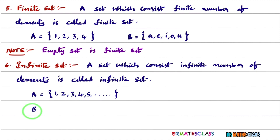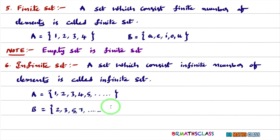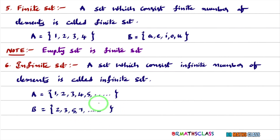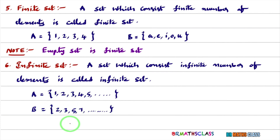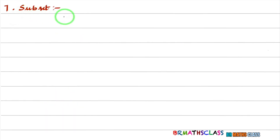Similarly, consider the collection of all prime numbers: 2, 3, 5, 7 and so on. Is the collection of all prime numbers a finite or infinite set? Infinite number of elements are present in set B. So these are examples of infinite sets. Now we will learn what is subset.